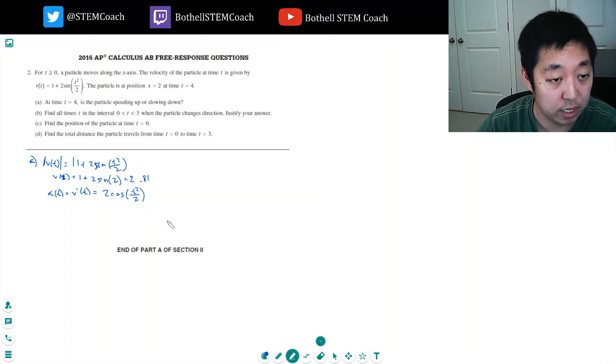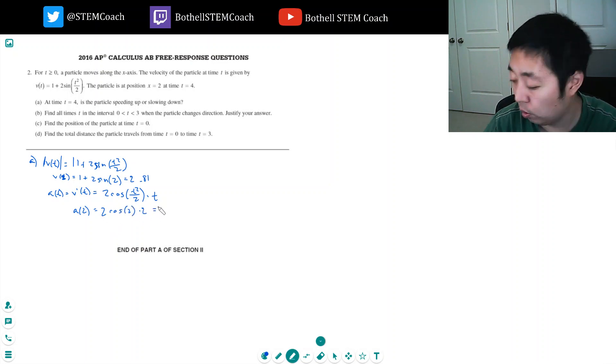Because the inside is not t, I got to multiply by chain rule times the derivative of the inside, which is just t. So a(2) is 2 cosine of 2 times 2, or 4 cosine 2. And that's equal to minus 1.66.